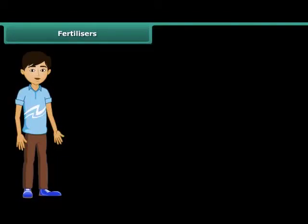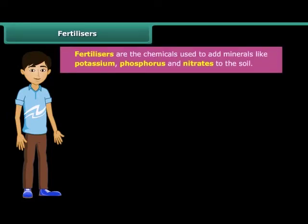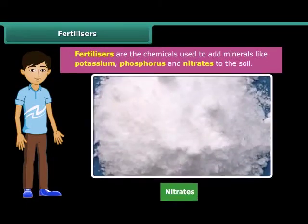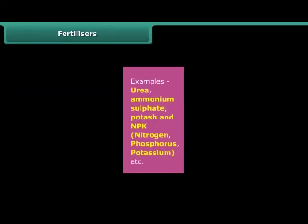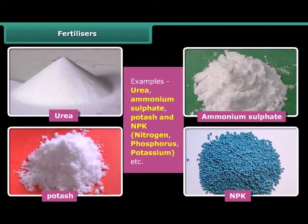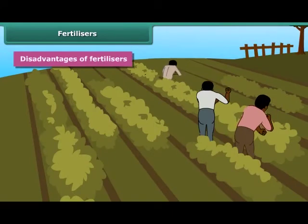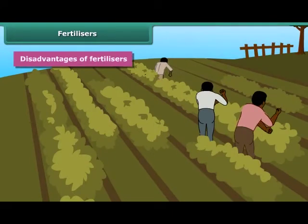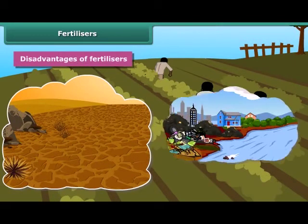Like manure, fertilizers are also used in replenishing the lost nutrients and minerals in the soil. Fertilizers are chemicals used to add minerals like potassium, phosphorus and nitrates to the soil. Fertilizers are produced in factories. Some examples of fertilizers are urea, ammonium sulfate, potash, and NPK — nitrogen, phosphorus and potassium. The use of fertilizers increases the crop yield. However, there are some disadvantages: excessive use of fertilizers makes the soil less fertile and they have also become a source of water pollution.